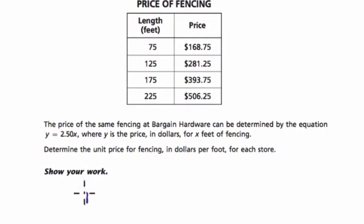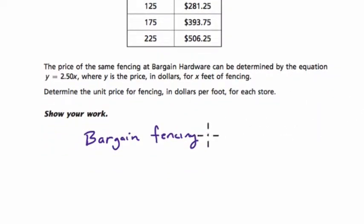Well, bargain fencing, we can calculate this, but what's nice is the way they've written the equation. It tells you the unit price. Bargain fencing has the equation y equals 2.5x. And essentially, this is in what's called mx plus b form, because y equals mx plus b. In this case, it's plus zero. There's nothing written there. So you can see that adding zero doesn't change anything. But once you write the plus zero, it's easier to see that this fits the mx plus b format, where 2.5 is m and zero is b, or the y-intercept.